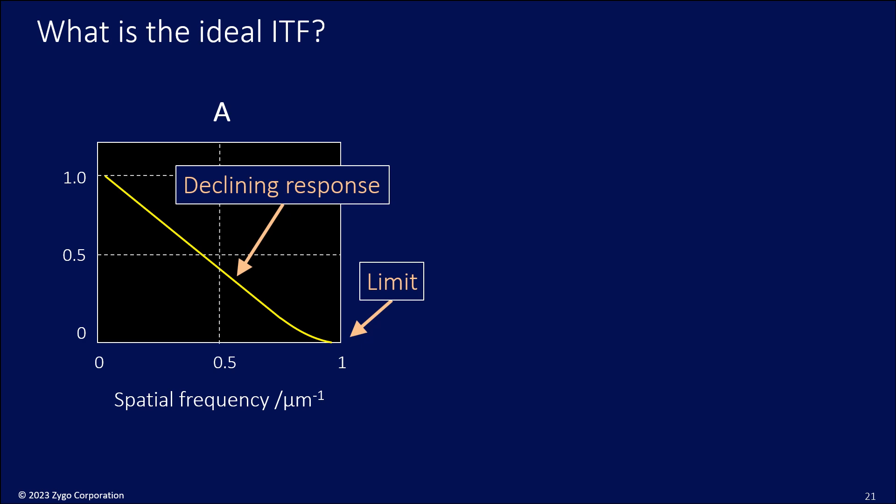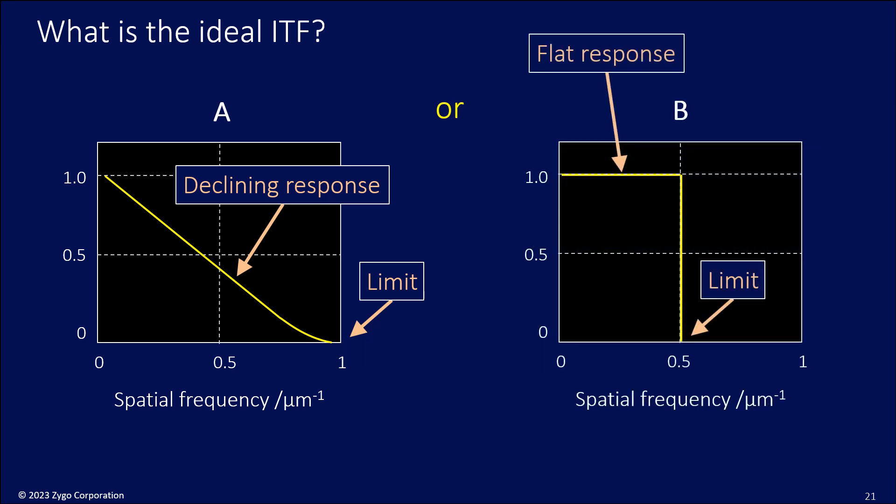What is the ideal ITF? What would be the ideal response of the instrument? You know you have some limit out there, but before you get to that limit, do we want a declining response, or do we want it to be a little bit more square, like this? A flat response going up to some limit point and then suddenly stopping. There is an argument that the picture on the right is more like what we would like to have in a measuring instrument than the picture on the left.